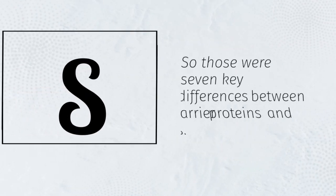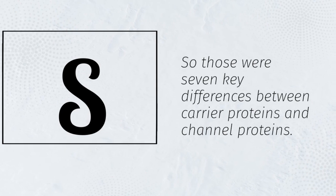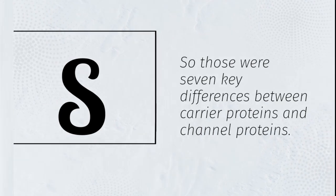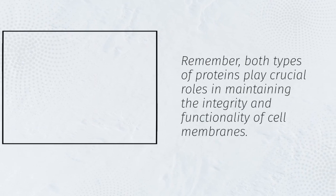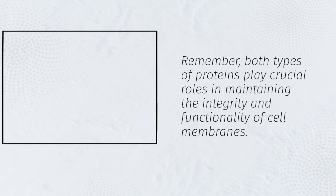So those were seven key differences between carrier proteins and channel proteins. Remember, both types of proteins play crucial roles in maintaining the integrity and functionality of cell membranes.